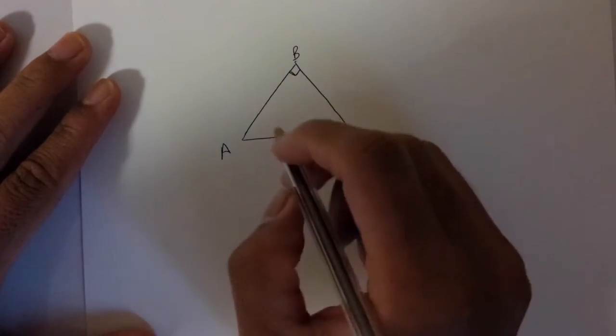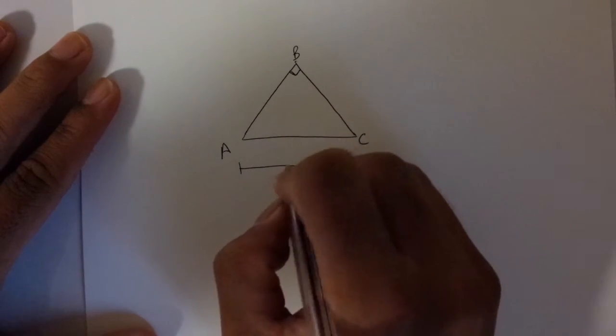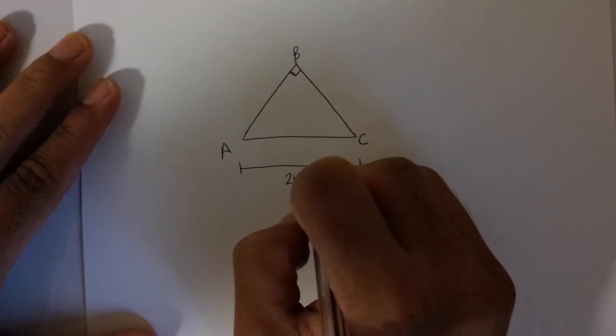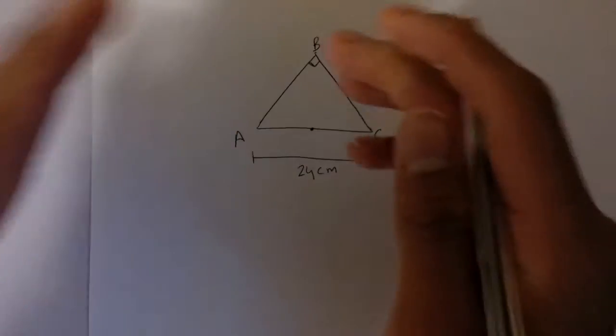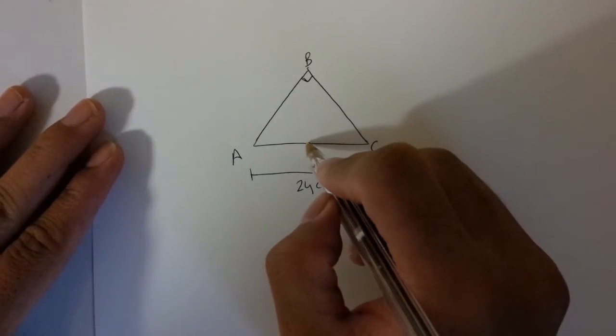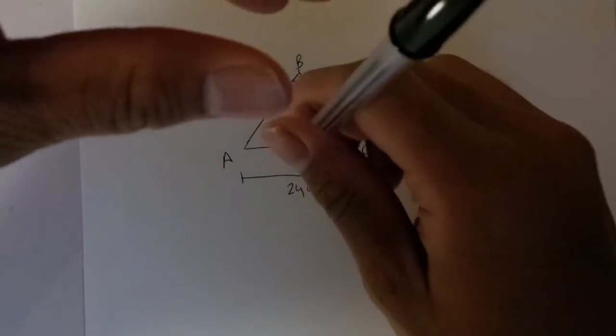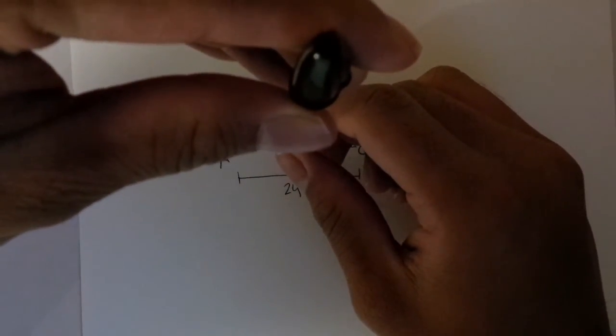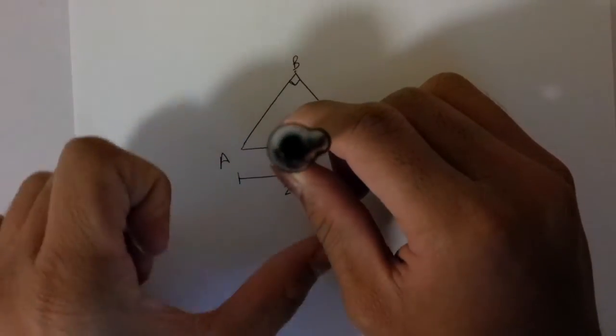Now this length AC is 24 centimeters and this triangular lamina is rotating about the midpoint of AC in a horizontal direction, which means about this axis from the midpoint this lamina is rotating around.